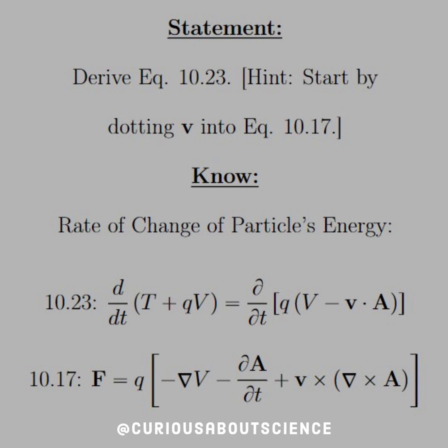The statement is, derive equation 10.23, and they give us a hint. Start by dotting v into equation 10.17. Okay, so what are all these things?